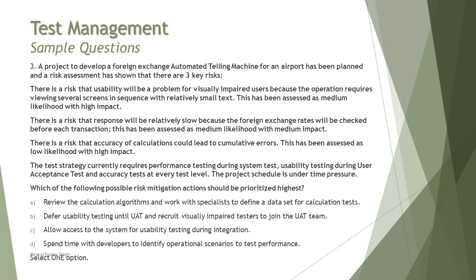Option D: spend time with developers to identify operational scenarios to test performance. Performance is tied to the exchange rates check, so there isn't much we can do about that. Comparatively, while options A and D are somewhat relevant, when you compare them with C, that is the most important option to prioritize — moving usability testing into integration rather than waiting for user acceptance testing. So the right answer is C.